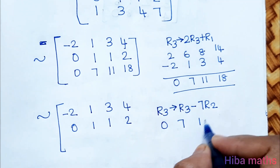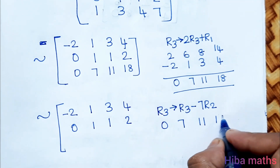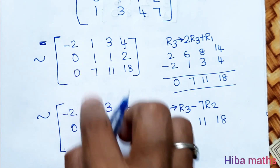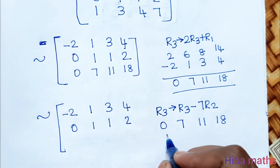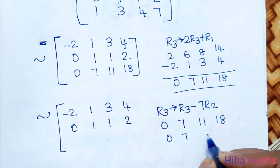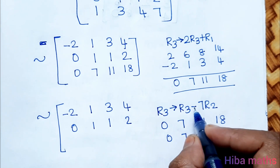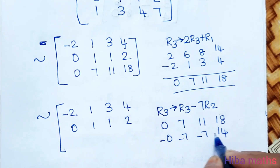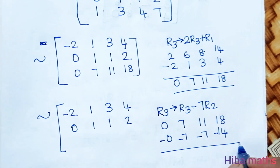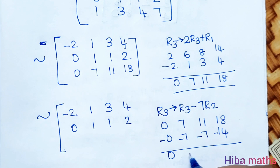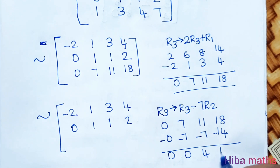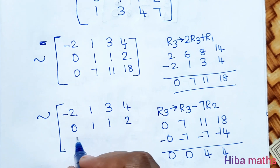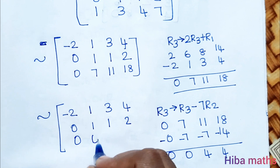We apply R3 minus 7 times R2. R2 multiplied by 7 gives [0, 7, 7, 14]. After sign change: the elements become 0, 0, 4, and 18 minus 14 is 4, so the result is [0, 0, 4, 4].